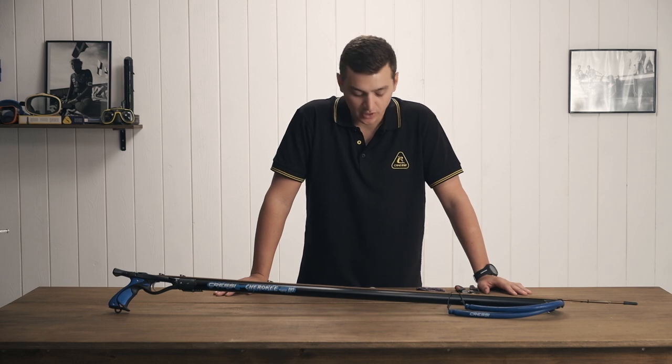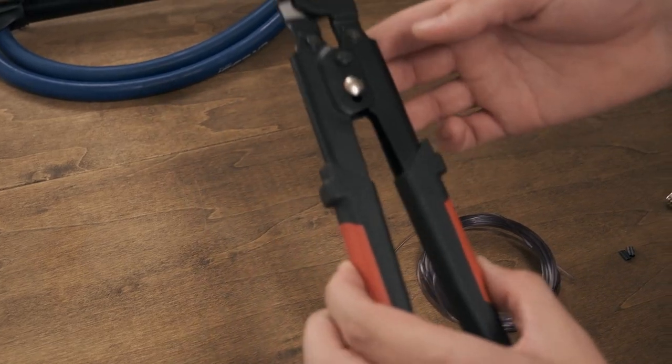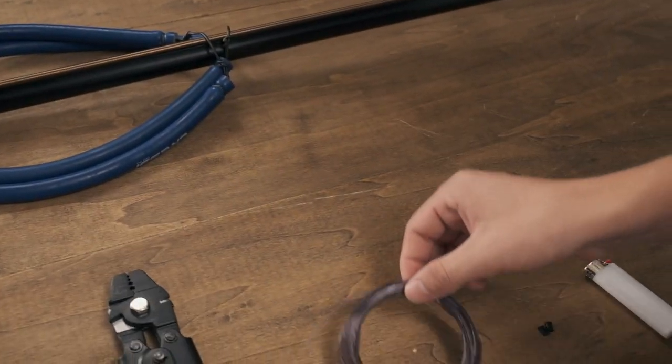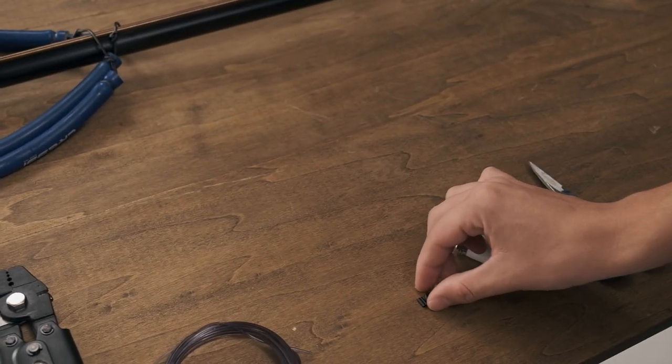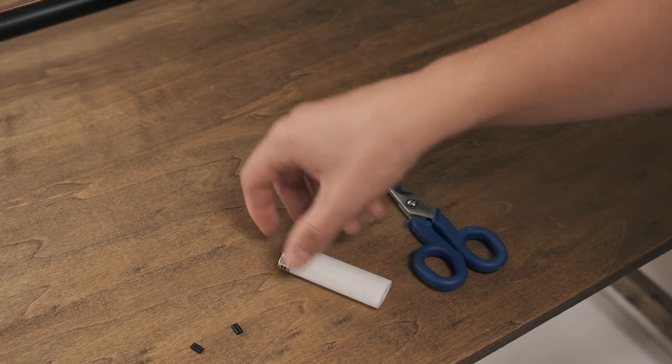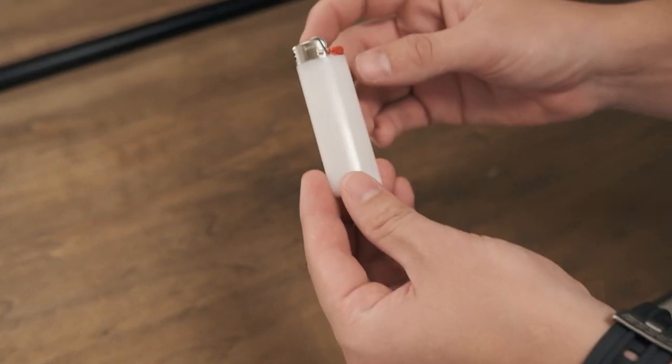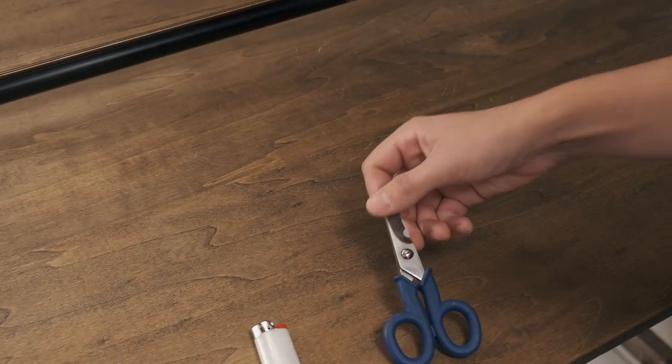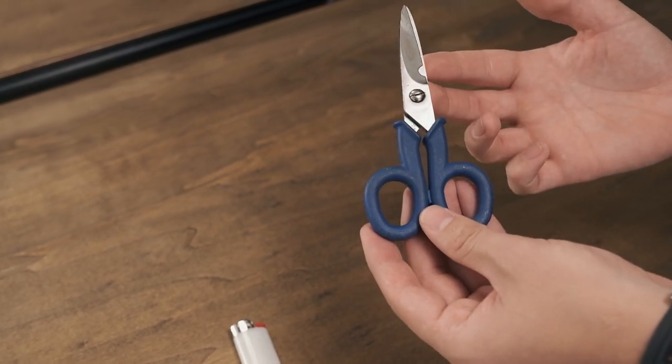Today I'm going to show you how to rig a spear gun. You're going to need a pair of crimping pliers, monofilament, at least two crimps, a lighter, and something to cut the monofilament with.